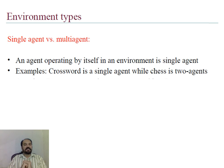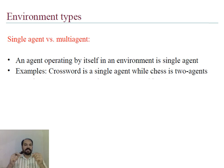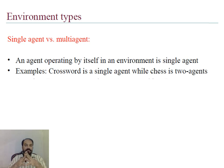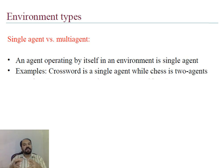The last environment type is single agent versus multi-agent environment. If there is only a single agent in the environment, it is called a single-agent environment. A multi-agent environment is one in which more than one agent operates. Crossword is a single-agent environment and chess is a two-agent environment.